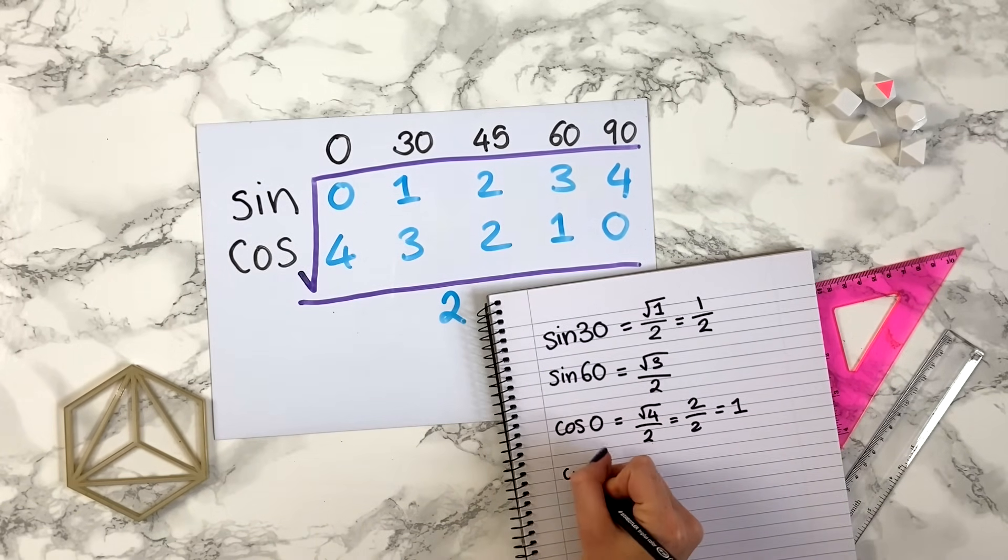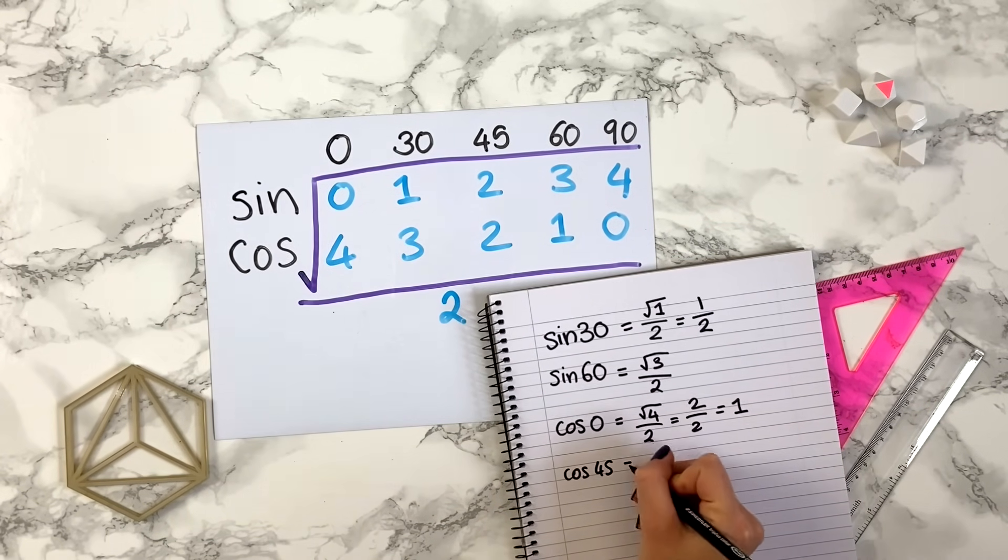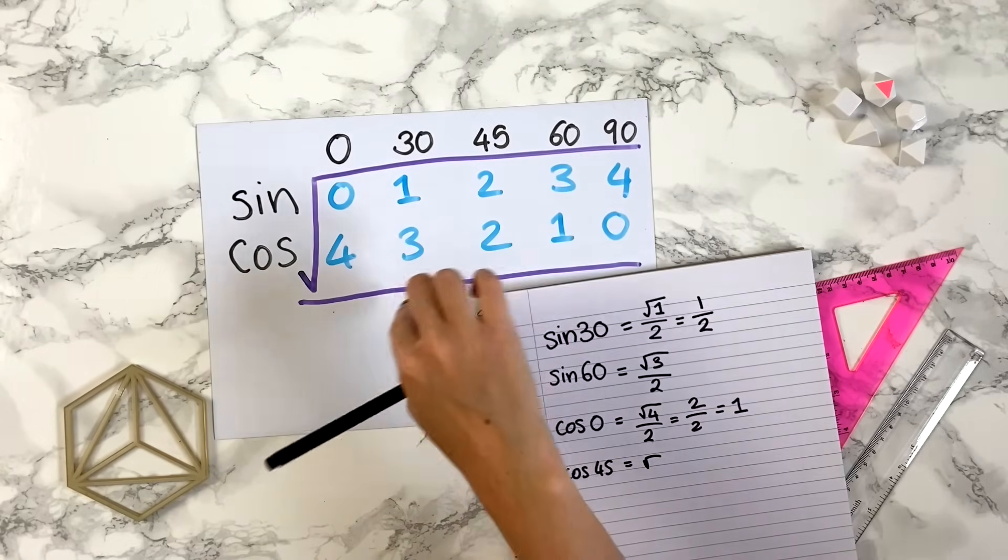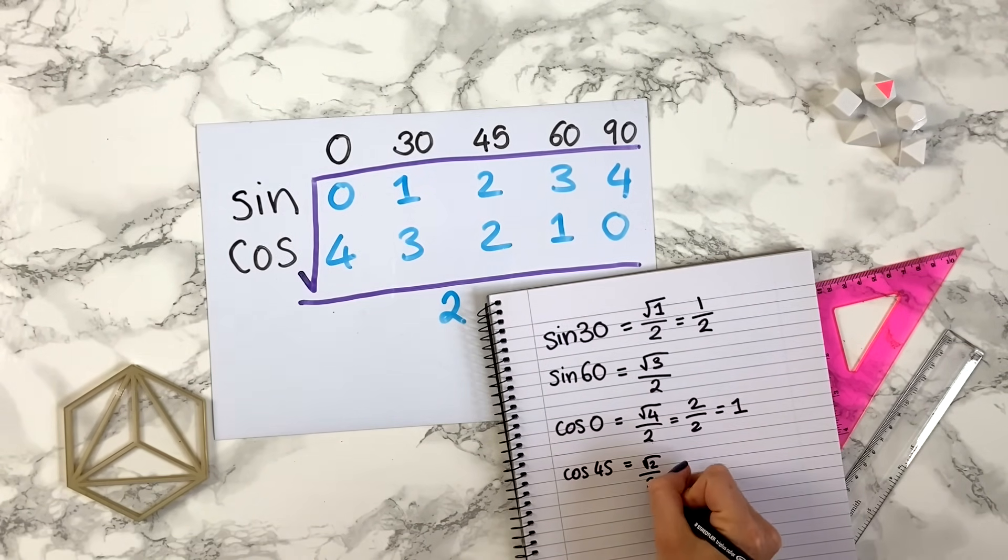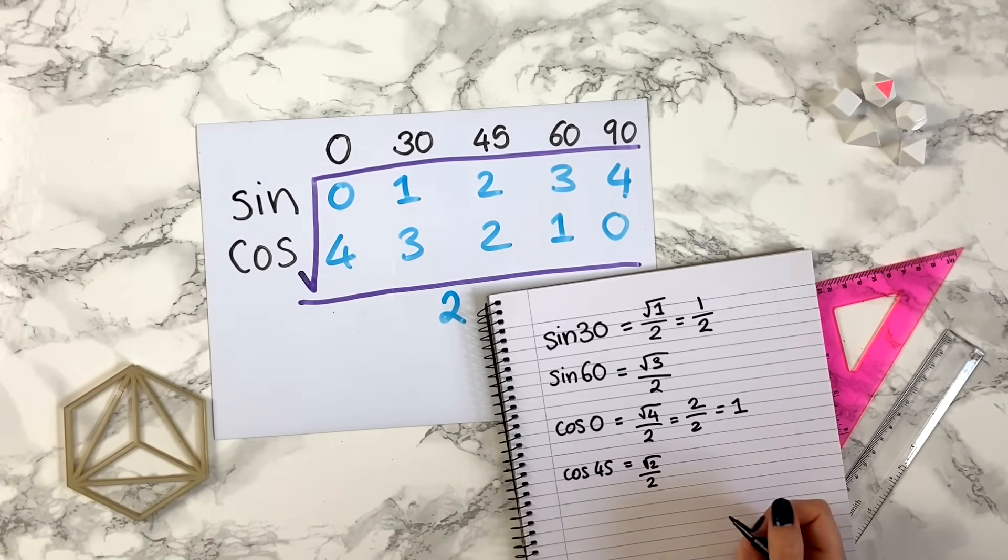Let's try cos 45. You take the square root over all this. You get a 2 here, and we're dividing by 2. So cos 45 is the square root of 2 over 2.